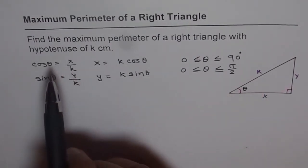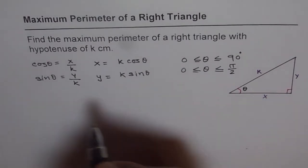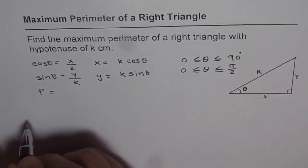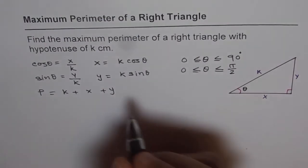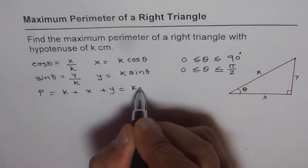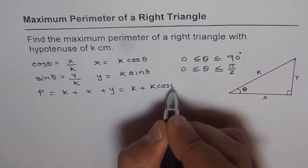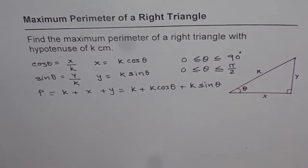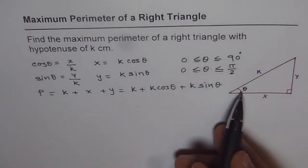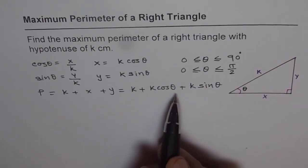Now we need to find the maximum perimeter. The perimeter is the sum of all sides, so perimeter P equals k plus x plus y, which equals k plus k·cos θ plus k·sin θ. Fortunately, we have the perimeter in only one variable, the angle theta.